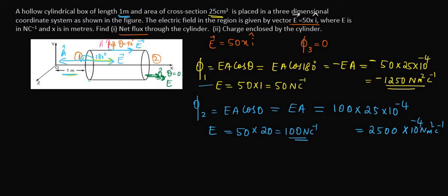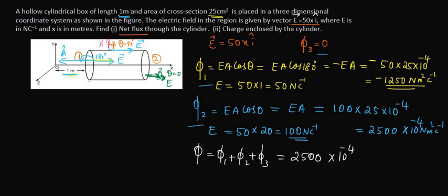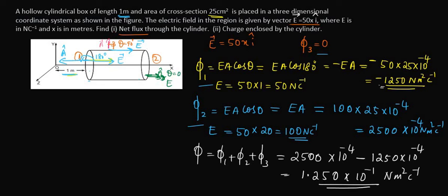We have phi 1, phi 2, and phi 3. Since fluxes are scalar quantities, the total flux is phi 1 + phi 2 + phi 3. Adding all three surfaces: minus 1250 × 10⁻⁴ plus 2500 × 10⁻⁴ plus 0. This gives a net flux of 1250 × 10⁻⁴, which equals 1.250 × 10⁻¹ Newton meter squared per coulomb.